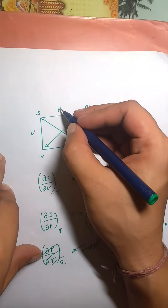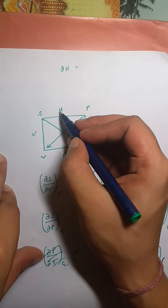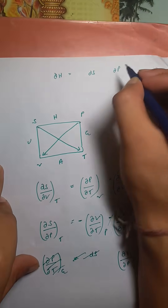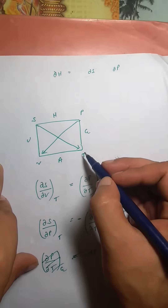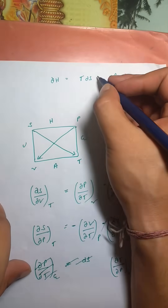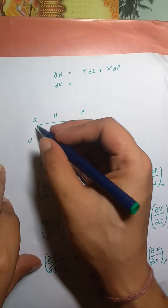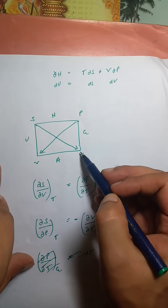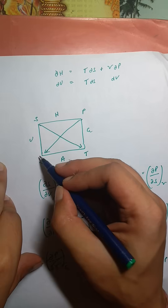Now for H — look at what's adjacent to H on the square: S and P. Write dS and dP. The opposite of S is T and the arrow goes from S to T, so we get TdS. For P, the arrow goes from P to V, giving +VdP. So dH = TdS + VdP. For U, adjacent variables are S and V. Again for S it's positive, giving TdS, but for V the arrow goes P to V and we need V to P — negative — giving dU = TdS − PdV.